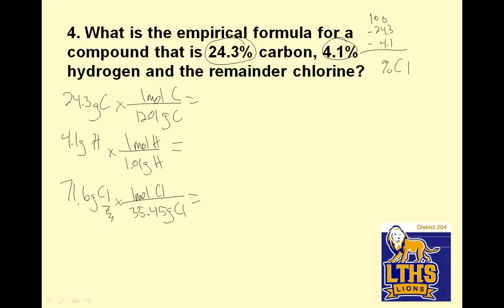I know it's diatomic, but we don't diatomize those guys. 24.3 divided by 12.01 is 2.0233. 4.1 divided by 1.01 is 4.0594. 71.6 divided by 35.45 is 2.0197.